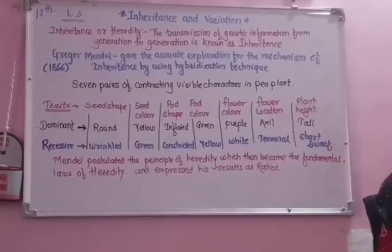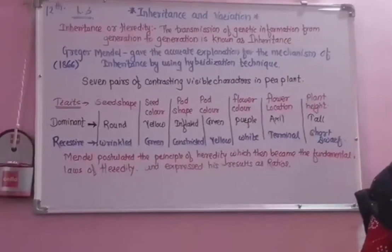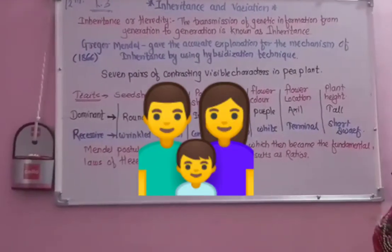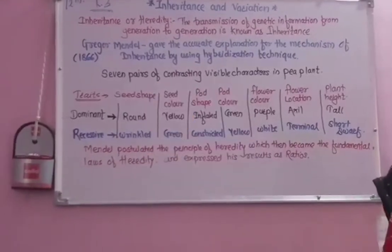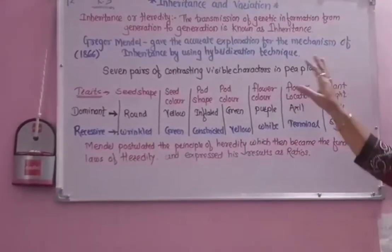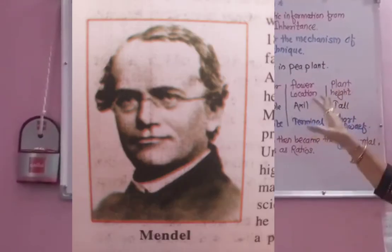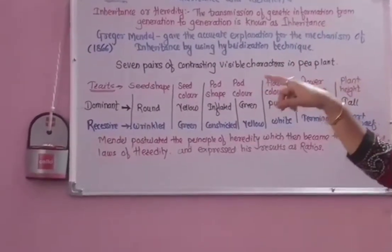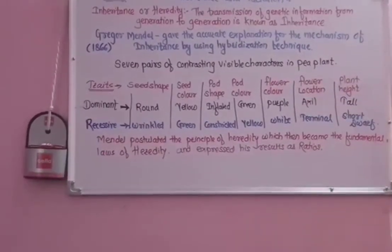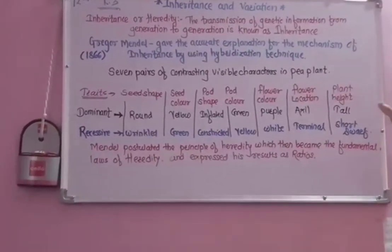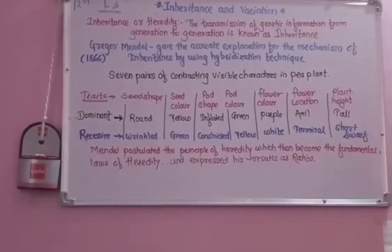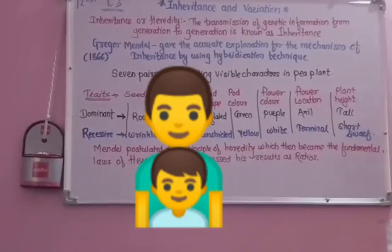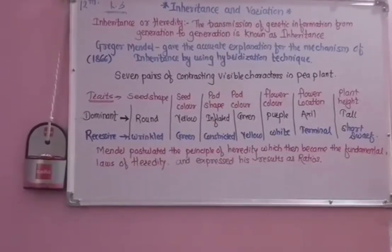Inherited characters, meaning traits from parents, are transferred to their offspring. The characteristics of the parents are passed on to their offspring. The first scientific explanation regarding inheritance was given by Gregor John Mendel in 1866. Mendel was the scientist who gave the accurate explanation for the mechanism of inheritance using hybridization technique. He was the first to say that characters are transmitted from one generation to the next through a particle he called a factor, which is now known as genes.